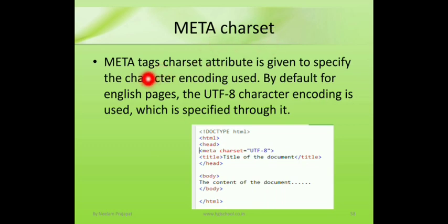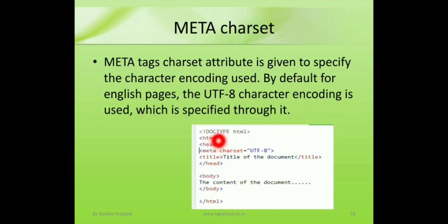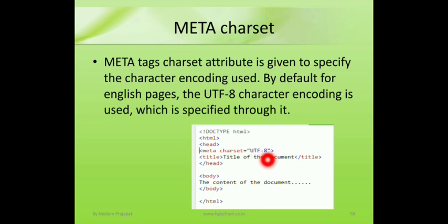Now, meta charset. The meta tag charset attribute is used to specify the correct character encoding. By default, for English pages we write UTF-8 character encoding. In the HTML5 structure, after the DOCTYPE declaration and the opening HTML tag, inside the head tag you write the meta tag. Charset is the attribute of the meta tag, and you write the value UTF-8. UTF-8 defines English pages. Then comes the title tag, then the body tag, and so on.